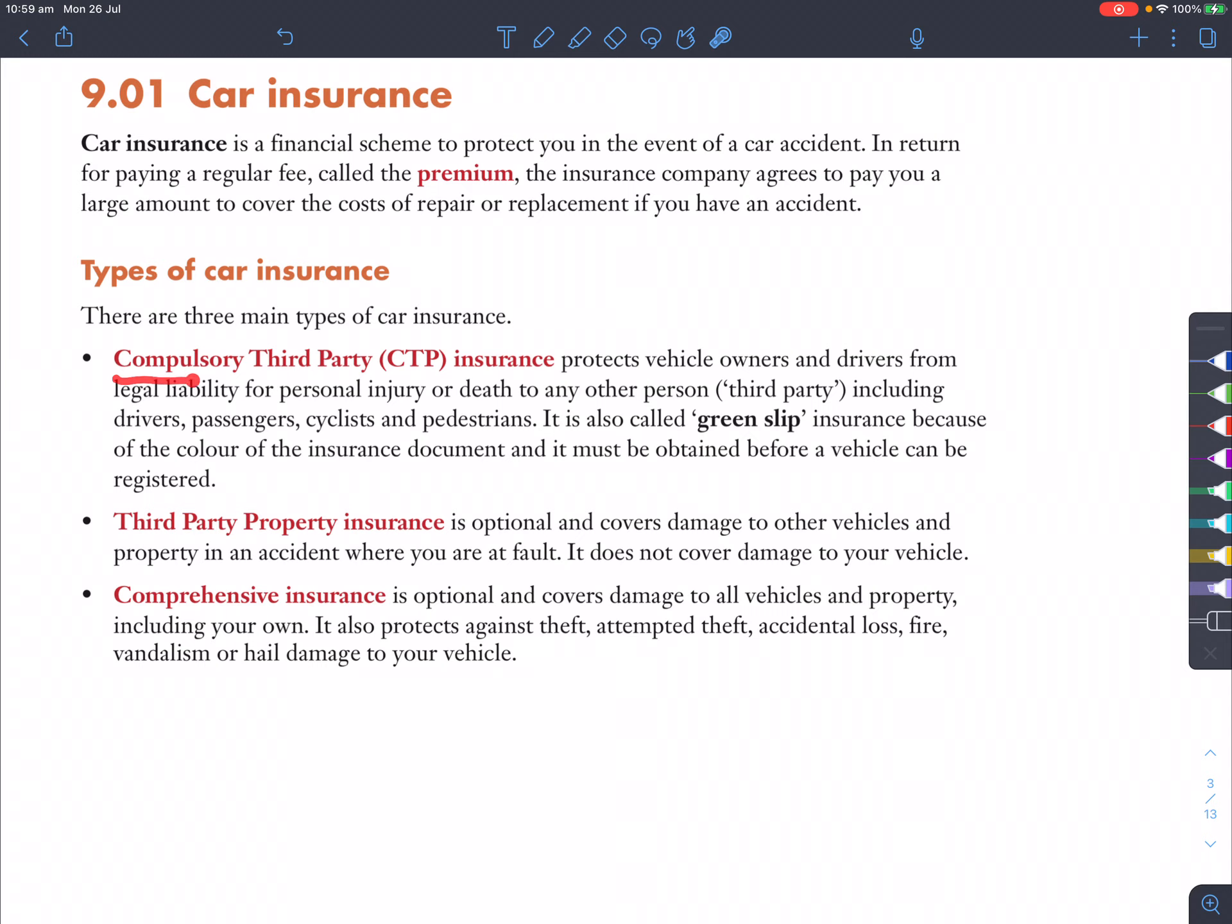So let's have a look at the three main types of car insurance. The first one is compulsory third-party insurance. Now this protects vehicle owners and drivers from legal liability for personal injury or death to any other person, including drivers, passengers, cyclists, and other pedestrians. And it's very important that this is also called the green slip, and this is a compulsory payment that you have to pay for whenever you own a car.